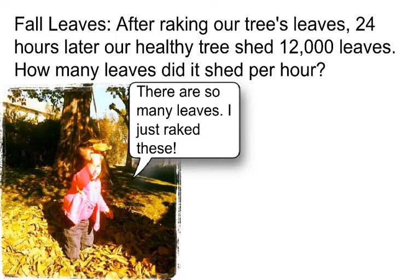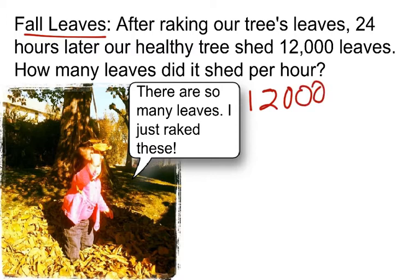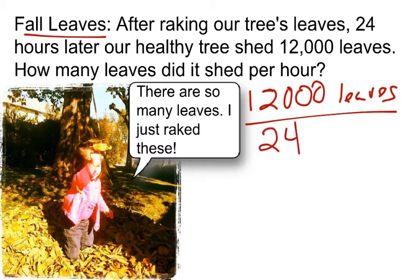Let's look at our first example — fall leaves. After raking our tree's leaves, 24 hours later our healthy tree shed 12,000 leaves. How many leaves did it shed per hour? So here we have a ratio, and in this case it's a rate. We have 12,000 leaves in 24 hours.